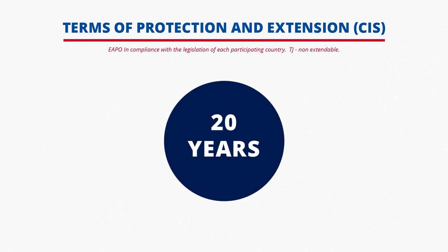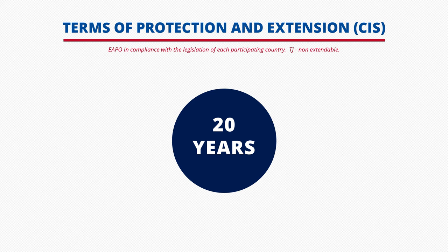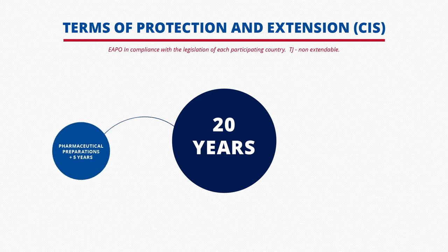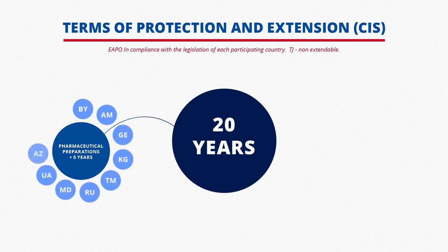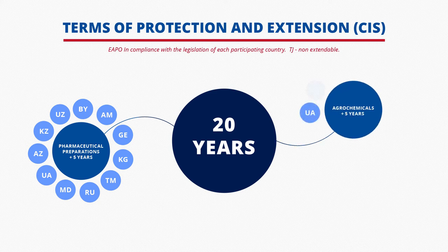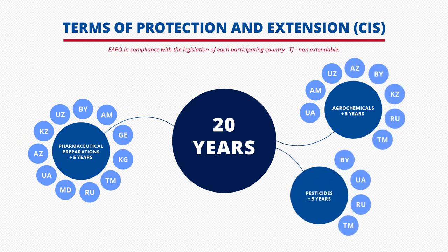It is common knowledge that a patent is valid within 20 years from the date of filing of the application. However, some jurisdictions provide for the possibility of its extension. In 11 CIS countries, except Tajikistan, the validity of a patent may be extended but not for more than five years for such objects of the invention as pharmaceuticals, the use of which require authorization from a competent agency. Eight of the aforementioned countries provide for extension of term for agrochemicals, and only four countries provide for extension of term for pesticides. The list of countries is available in the slide.